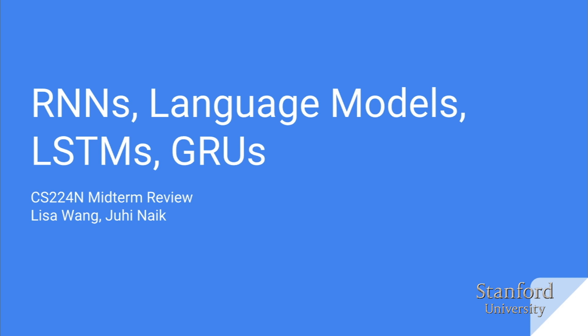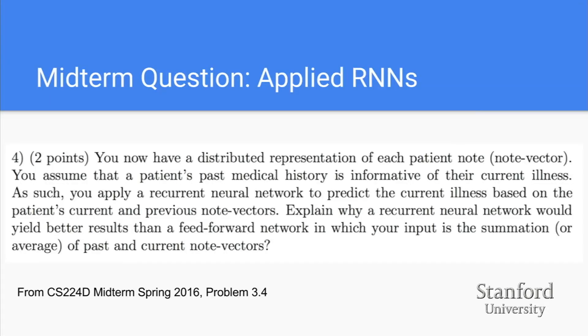RNNs are some of the coolest architectures in this class. Here's a motivating problem: you have a distributed representation of each patient note, and you assume a patient's past medical history is informative of their current illness. You apply a recurrent neural network to predict the current illness based on current and previous note vectors. Why would an RNN be better than a feedforward network that inputs a summation or average of past and current note vectors?